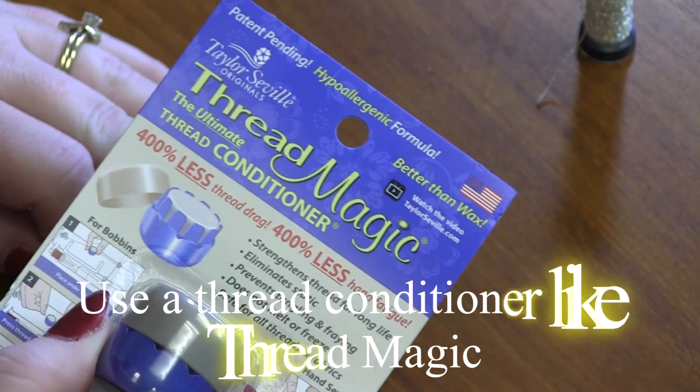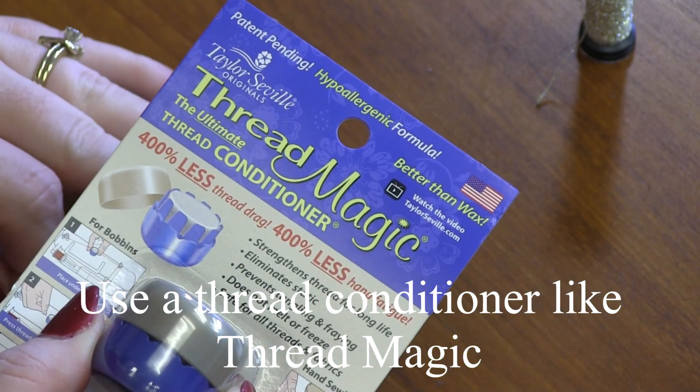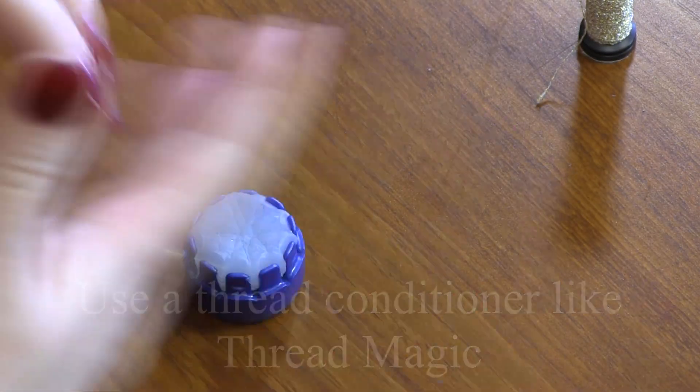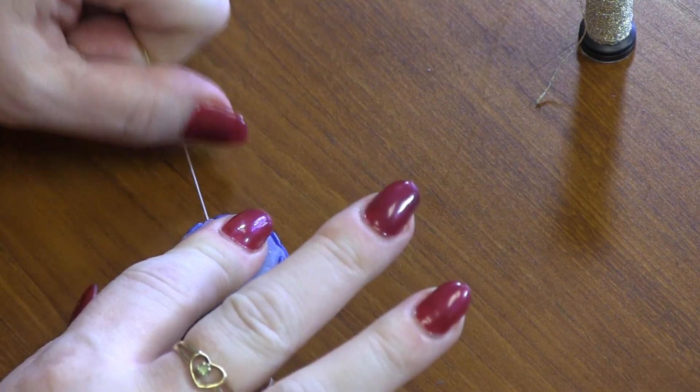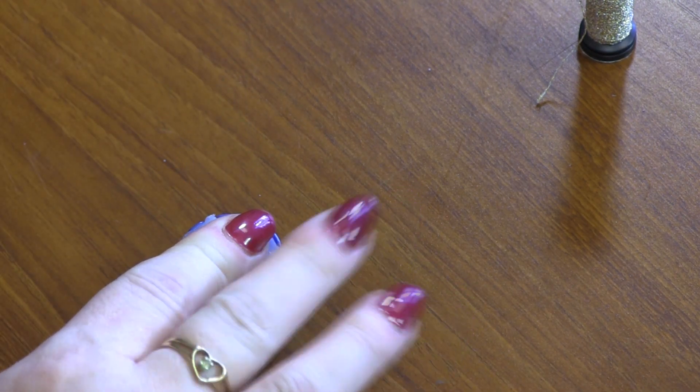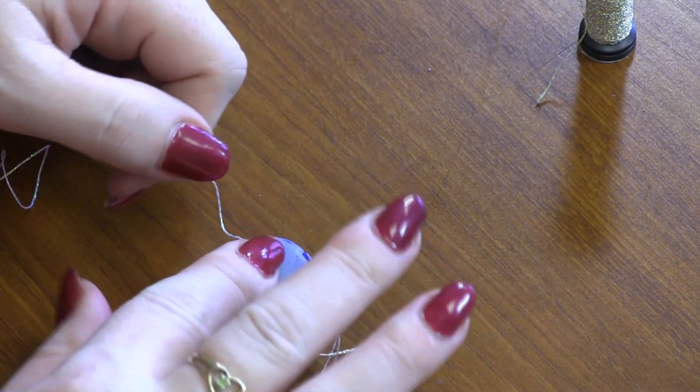Tip 2: Using a thread conditioner like Thread Magic makes working with metallic floss so much easier. Simply place the metallic floss through the thread conditioner, slide it through, making sure you coat both ends.